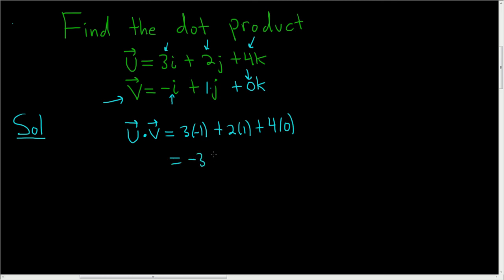So this is negative 3 plus 2 plus 0. So negative 3 plus 2, that's equal to negative 1. So the dot product of these two vectors is equal to negative 1. I hope this helps.